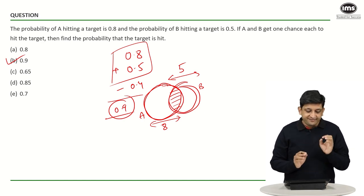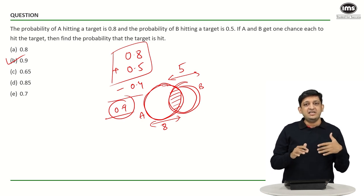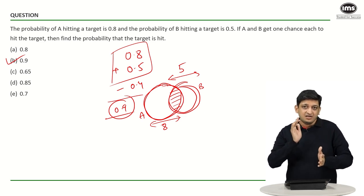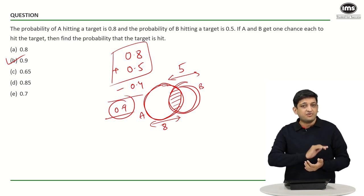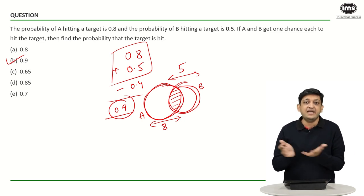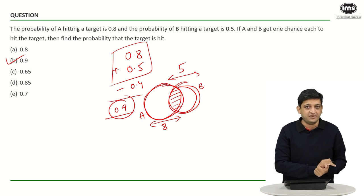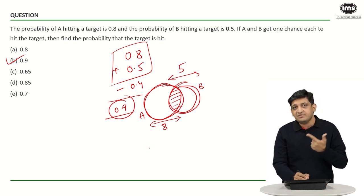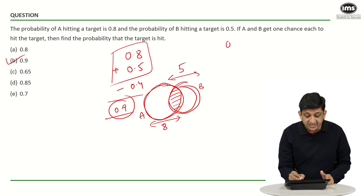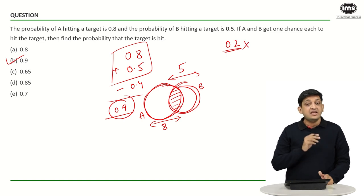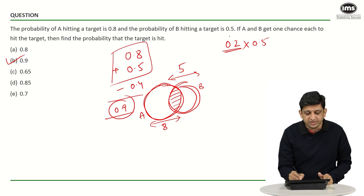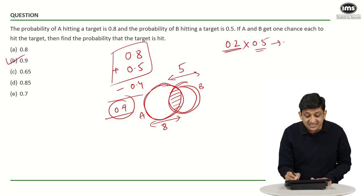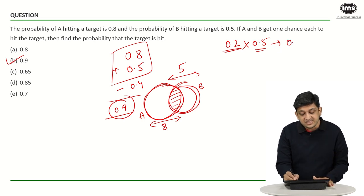Alternatively, we can find the probability of the target being missed. If you subtract the probability of the target being missed from 1, you get the probability of the target being hit, because it is a binary event — either you hit the target or you do not. The probability that the target will not be hit means A will not hit and B will not hit. The probability of A not hitting is 0.2, and the probability of B not hitting is 0.5. So the probability the target does not get hit is 0.2 × 0.5 = 0.1.